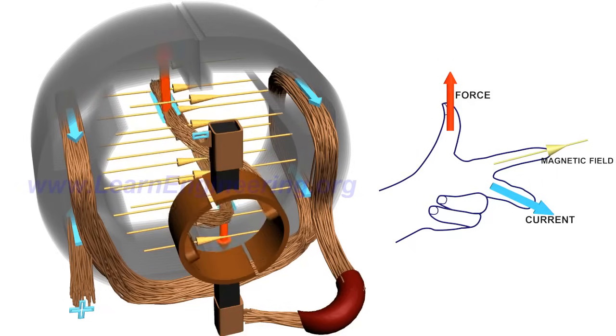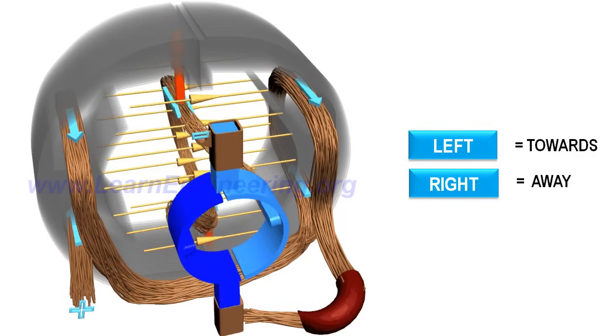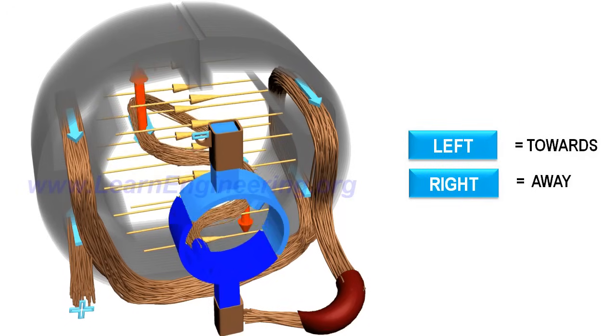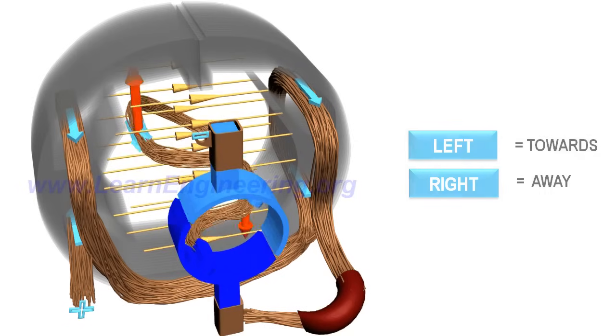With the help of commutator rings, a unidirectional current is always made to flow through the left and right side of the coil. Thus, the torque action is always unidirectional and the rotor continues to rotate.